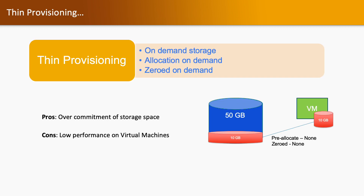Thin provisioning is on-demand storage. When a virtual machine requires space, ESXi does not allocate the complete space. It only allocates space when the VM has to write data, and zeroing is also on demand. ESXi formats the storage for that space during the demand when the virtual machine puts a request for writing data, rather than allocating all space upfront.